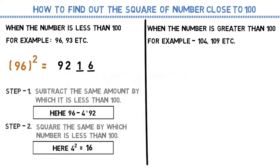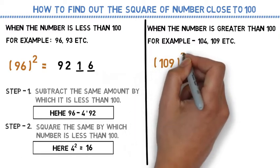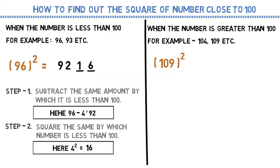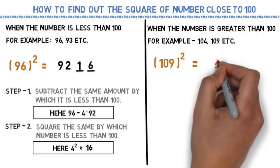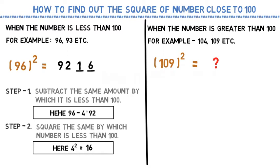Now let's try to find out the square of a number which is greater than 100. Suppose 109.